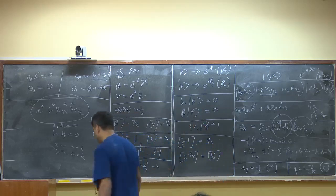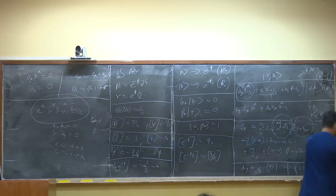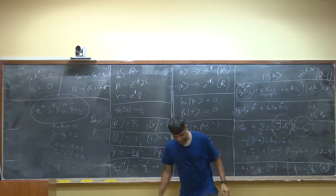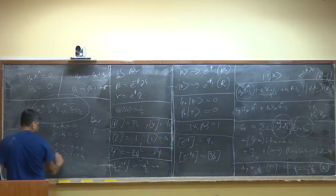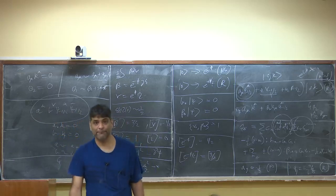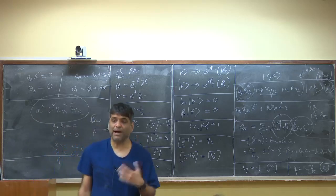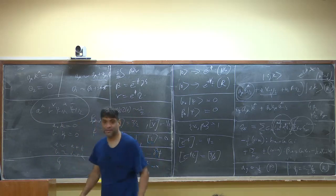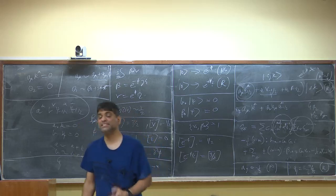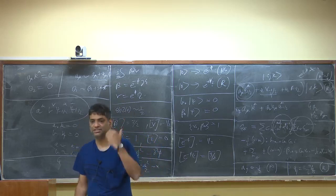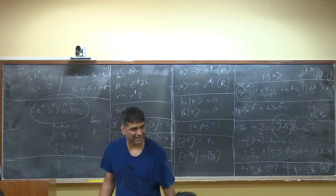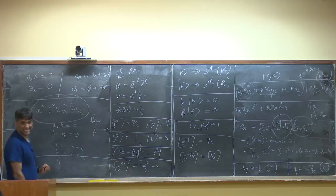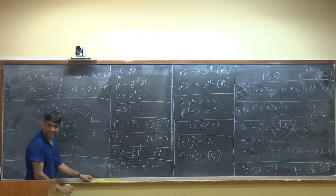For massless states, the physical states are: in the NS sector, a_mu psi_{minus half}^mu subject to the transversality and gauge conditions; and in the Ramond sector, chiral or anti-chiral spinors obeying the Dirac equation. Crossing left and right movers: the NS-NS sector gives the graviton g_mu nu, the Kalb-Ramond field b_mu nu, and the dilaton phi. The NS-Ramond and Ramond-NS sectors give fermions — the tensor product of a vector with a spinor.